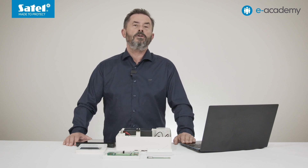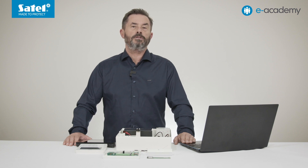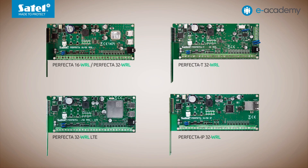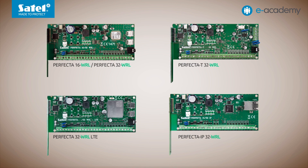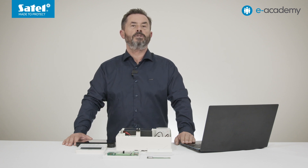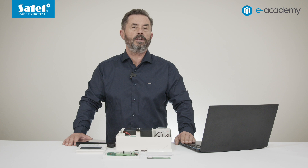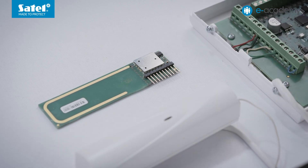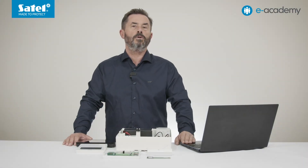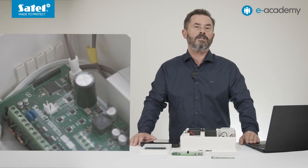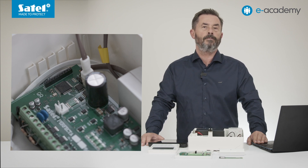Now I will briefly discuss the interaction between the Perfector 64M control panel and the micro wireless system. Adding and programming radio devices follows the same procedure as for Perfector WRL control panels. The main difference is that the Perfector 64M does not have a built-in radio module, so the Perfector RF module must be used. This module is non-typical because you do not connect it directly to the bus terminals as with other expansion modules — it must be plugged into a special connector on the control panel electronics board.